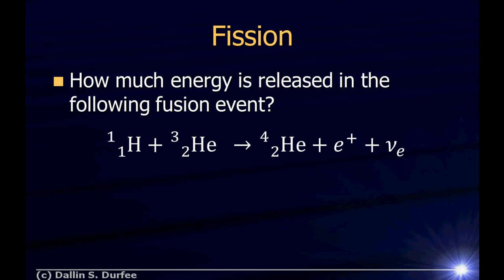How much energy is released in this fusion event? A hydrogen plus a helium three fused to make helium four plus a positron and a neutrino. The released energy is the change in mass times C squared.